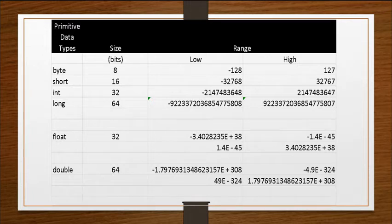And then look at the range of the byte. The byte goes from negative 128 to positive 127. And as you move down the list to short, you see that the number gets larger and larger in terms of its range, and it doubles in size of the number of bits.